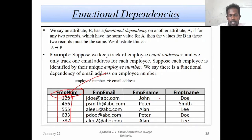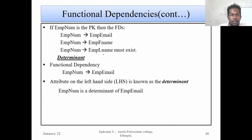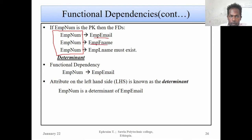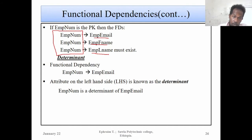Employee number is the primary attribute. The primary attribute is the primary key, because it is unique. Employee number is the employee determinant. The primary attribute corresponds to employee first name and employee last name. We call this a Functional Dependency.